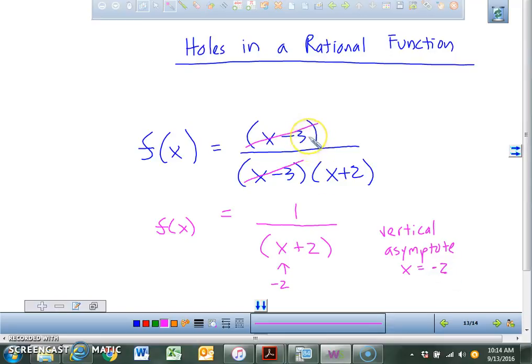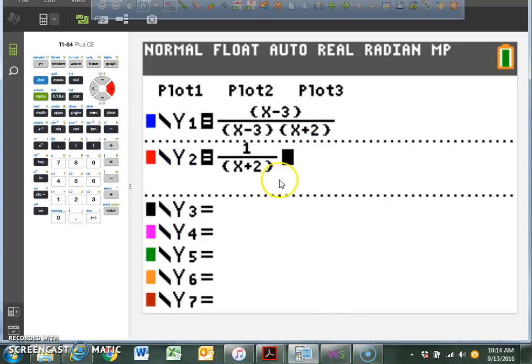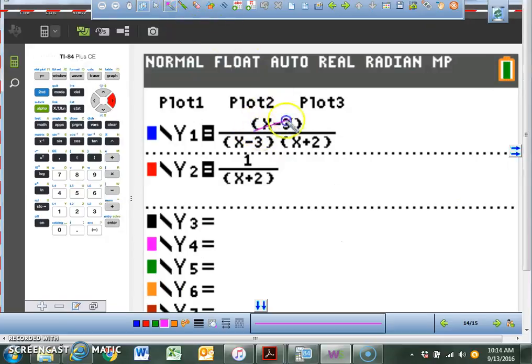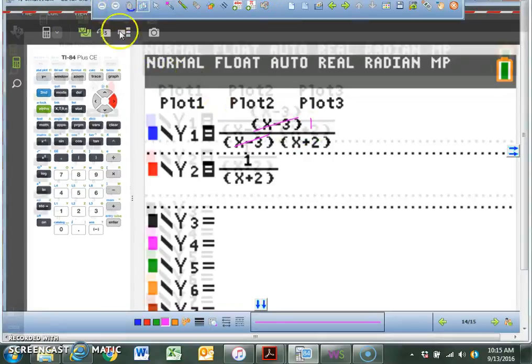Now, we've pre-typed in this function into our graphing calculator, correct? So if we go to our graphing calculator, we see we've actually plugged this in. Now, what happened to these right here? They cancel out, and you're going to be left with this right here, correct? So if we graph these, we should have basically the same graph. So go ahead and let's hit graph and see what it looks like.